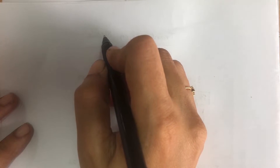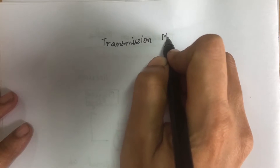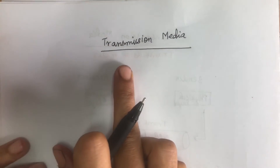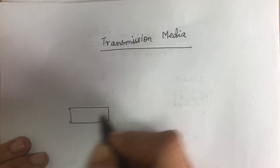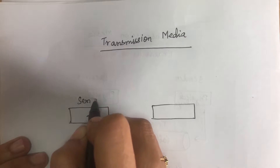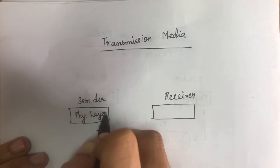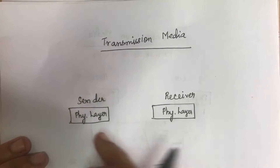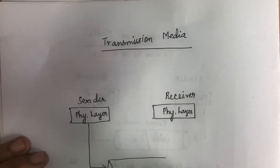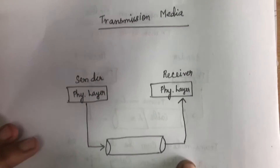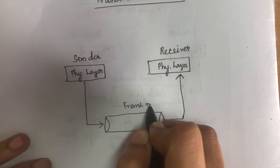Hello everyone. Next we are going to see the topic called transmission media. Transmission media is located below the physical layer and it is controlled by the physical layer. When a message has to be transmitted from the sender to the receiver, it has to be sent from the physical layer through the transmission media, and the message will be given to the physical layer on the receiver side.